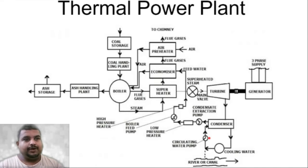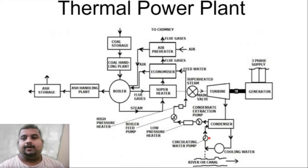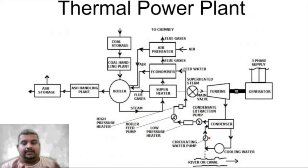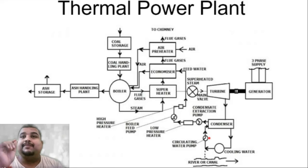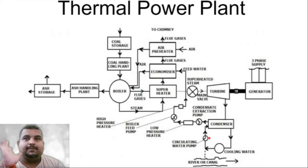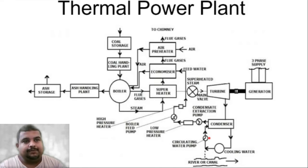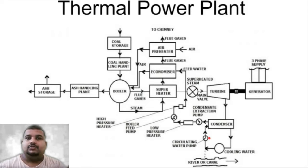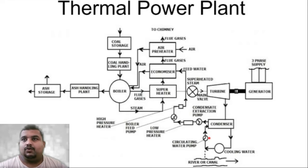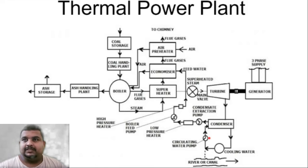Today we are going to start with our second lecture on thermal power plants — understanding how a thermal power plant works. We are going to learn about the schematic diagram of a thermal power plant. The ultimate outcome of a thermal power plant is electricity, and I will use the laser pointer to show you that we are supposed to reach the three-phase supply coming out of the generator.